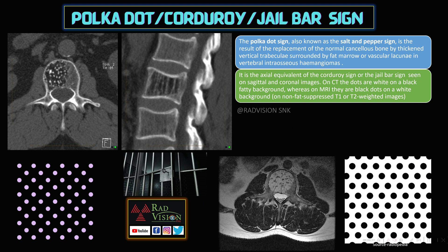The polka dot sign shows multiple prominent vertebral trabeculae against a fatty background or fatty marrow in case of intraosseous hemangioma. These are multiple vertical trabeculae on sagittal sections, which mimic the jail bar sign. The axial sections resemble the polka dot sign, whereas the sagittal or coronal images typically depict the jail bar sign.